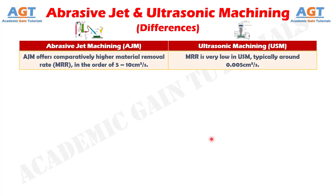Number 5: Abrasive jet machining offers a comparatively higher material removal rate in the order of 5 to 10 cubic centimeters per second, whereas the material removal rate is very low in ultrasonic machining — typically around 0.005 cubic centimeters per second.